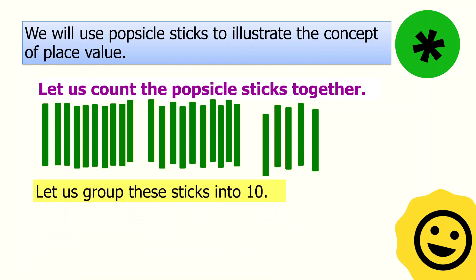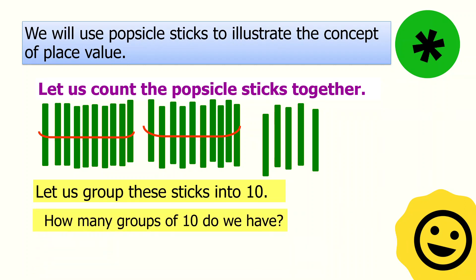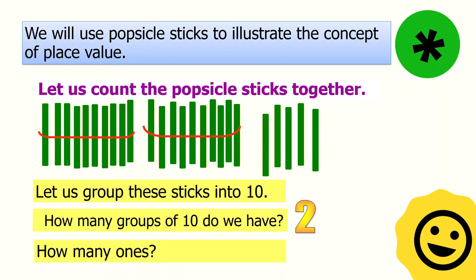All right, let's group these sticks into 10. We have this first group of 10 and another group of 10. There are 5 popsicle sticks left. We can't group them by 10 because it's not enough. So how many groups of 10 do we have? We have 2. And how many ones are there? We have 5 ones.